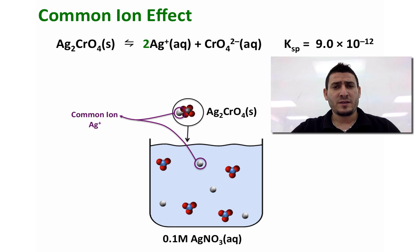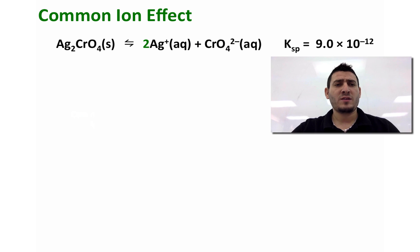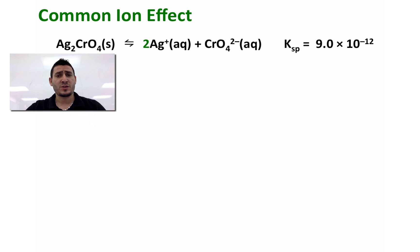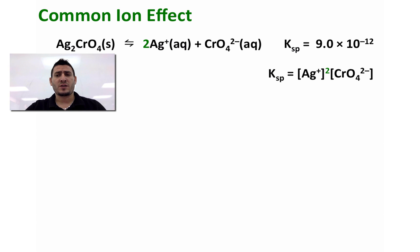We will study the effect of the common ion on the solubility of solids. Let's take a look at this equilibrium where silver chromate gives two Ag⁺ and one chromate ion. The Ksp is given to be 9.0 × 10⁻¹². The expression of Ksp can be written as the concentration of silver squared multiplied by the concentration of chromate.